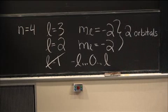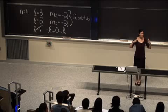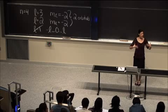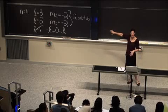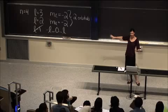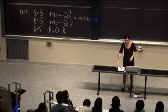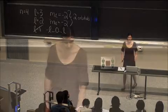Hopefully if you see any other combination of quantum numbers and it doesn't quickly come to you how many orbitals you have, you can actually try to write out all the possible orbitals and that should get you started.